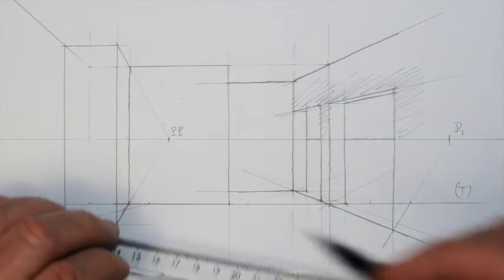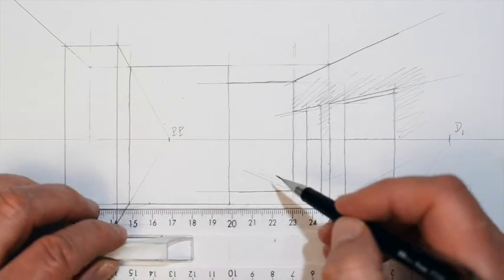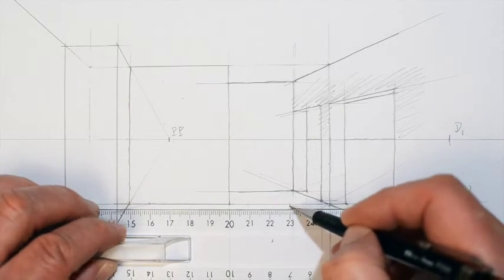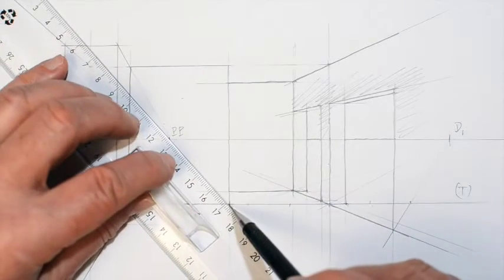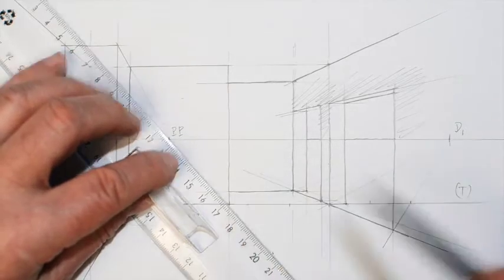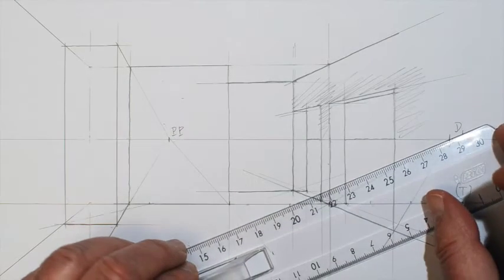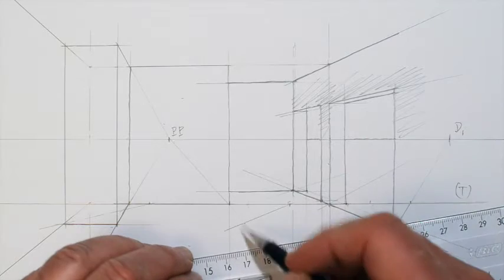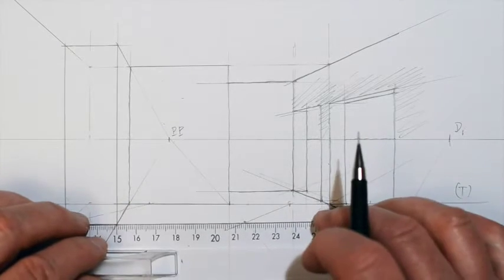So if I want 1.5 meters, that means 3 centimeters on the drawing. One line to the central point, one line to the distance point, and here I find the crossing at 1.5 meters.